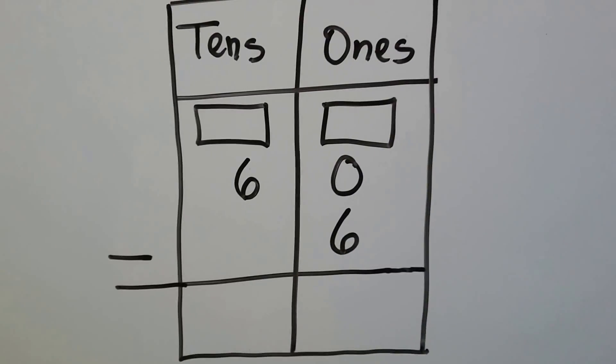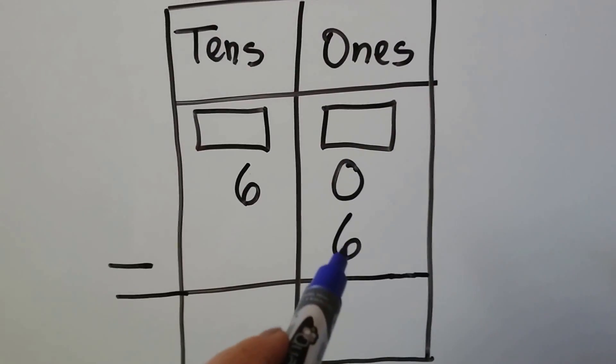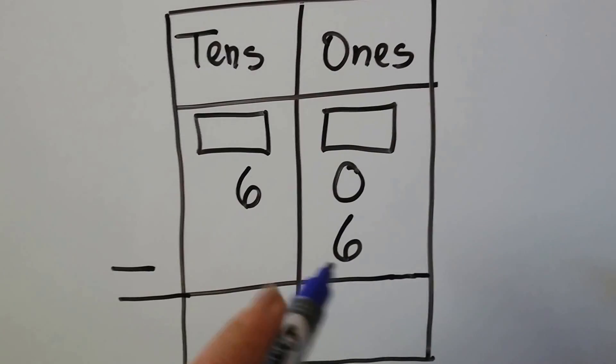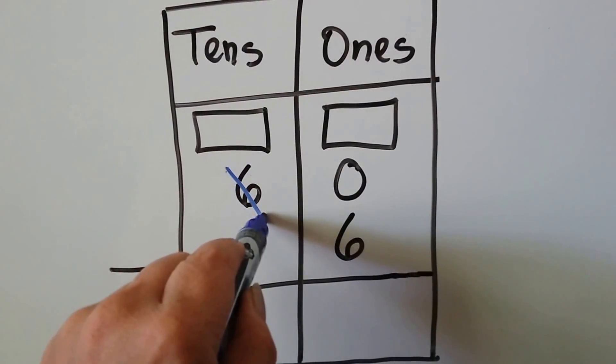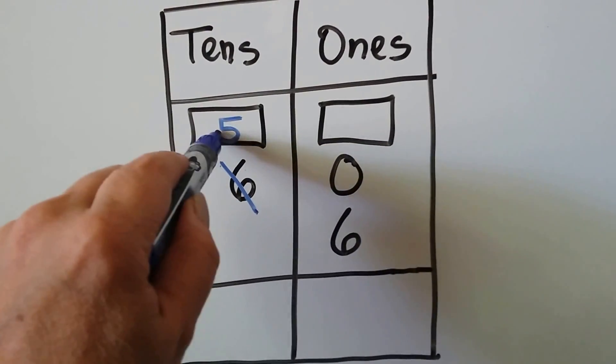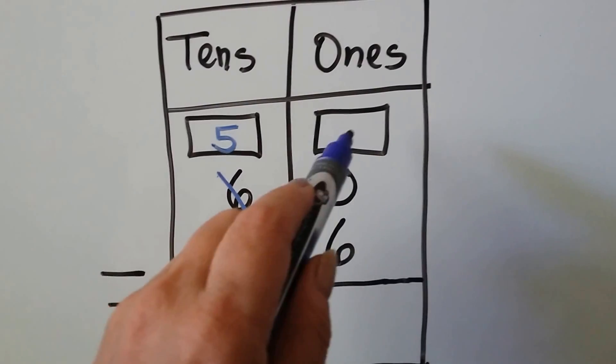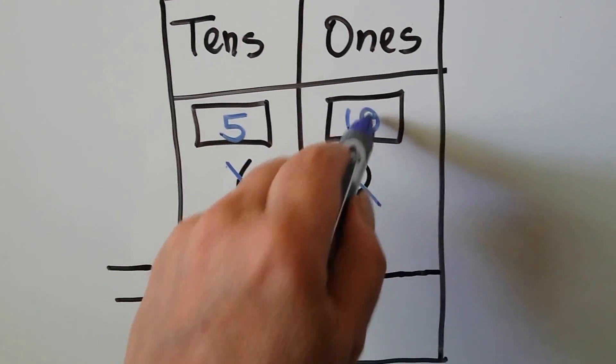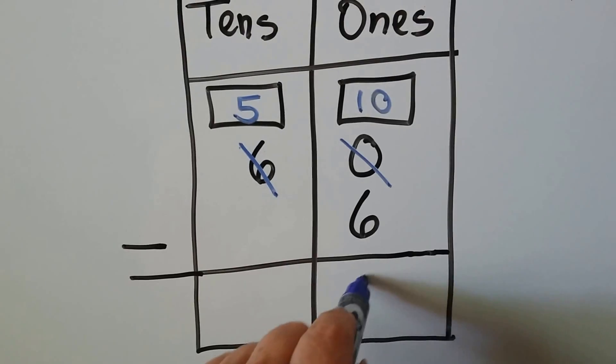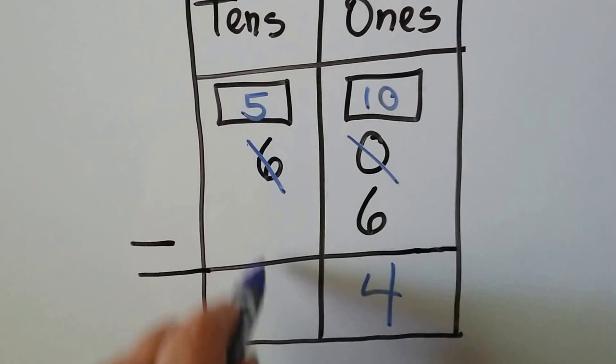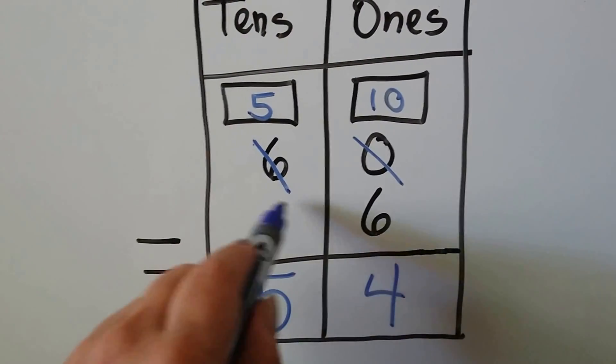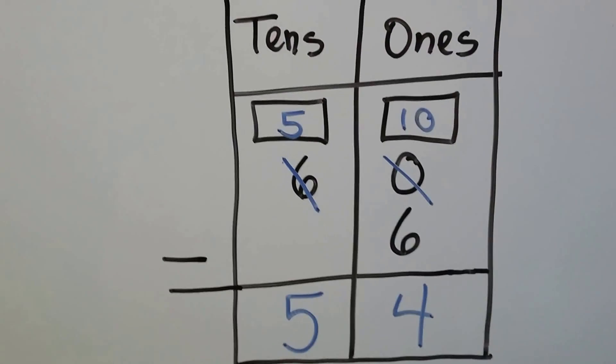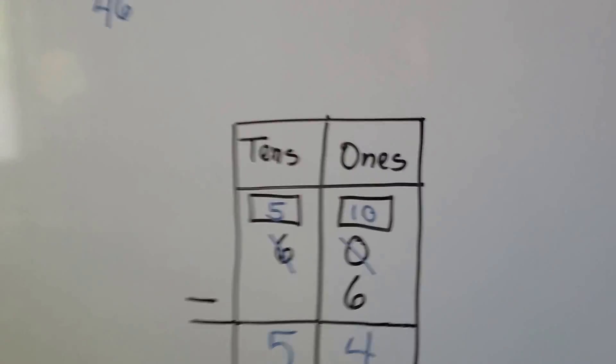If we have 60 take away 6, we look at this 6 and it's larger than the 0. So we need to regroup. This 6 becomes a 5 in the tens place. We give it to the ones place. So now instead of 0 ones, we have 10 ones. 10 minus 6 is 4. And we bring the 5 down because there's nothing to subtract here.